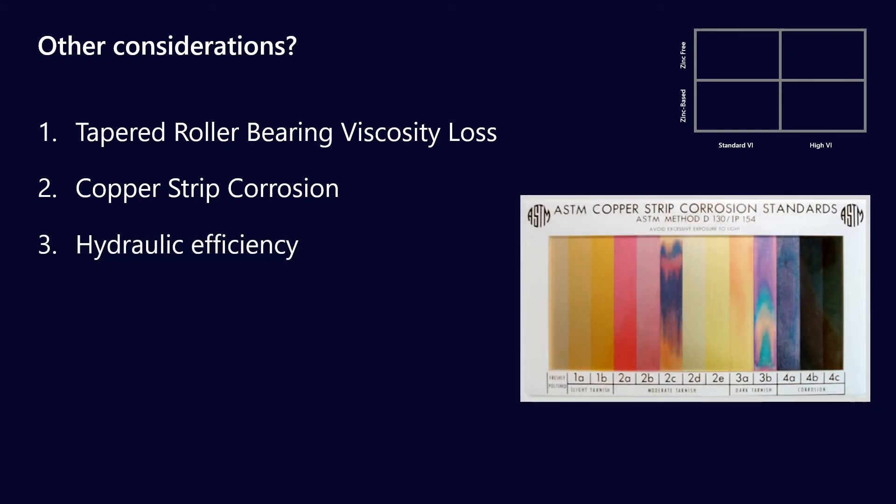Copper strip corrosion test. So this is one where the lubricant will be subjected to a copper strip and depending on the results at the end of the test they'll give you a score based on this rating. That can be in particular very useful if you have a lot of copper in your system. So either copper in your bearings in the hydraulic pack or maybe you have copper oil coolers. This is a really handy test to have on file.